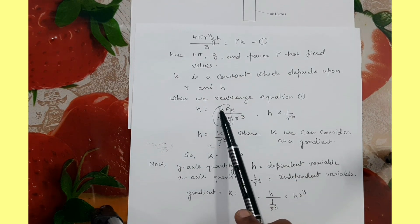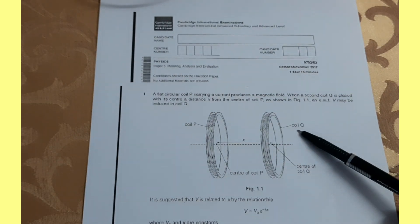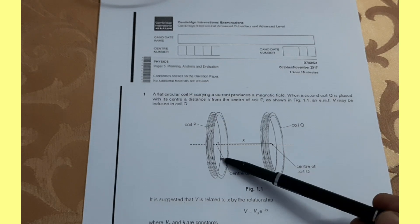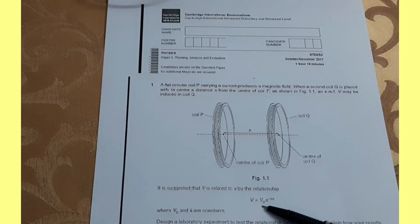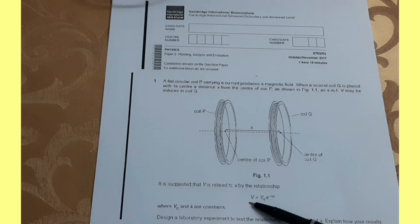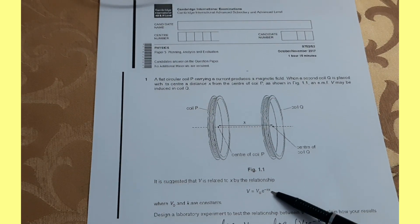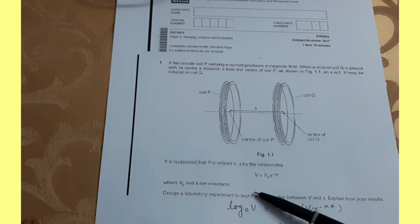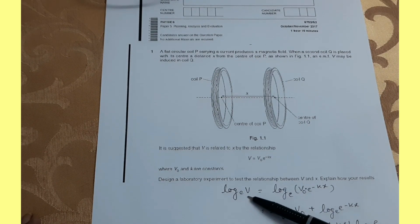By just taking care of this equation we can figure out dependent and independent variables, gradient, y-intercept, and what quantities go on the graphs. The next question is from October/November 2017. There are two circular coils P and Q, and x is the distance between the coils. The relation given in the question is V = V₀e^(−kx), where V is the EMF, V₀ is a constant, k is also a constant, and x is the distance between the coils.